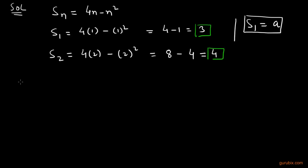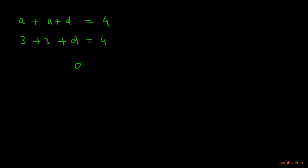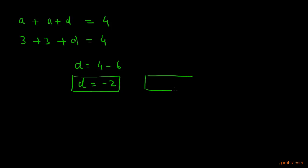Therefore, the sum of the first term and the second term equals 4. We have calculated A = 3, so 3 + A2 = 4, which gives A2 = 1. Since A2 = A + D, we get 3 + D = 4, therefore D = 4 - 6 = -2. So the first term is 3 and the common difference D is -2.